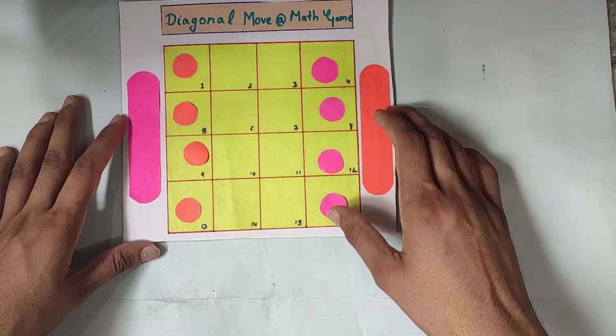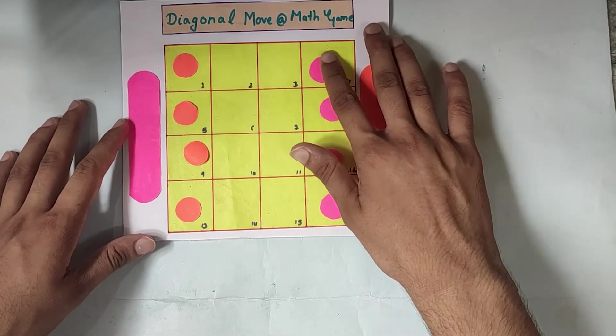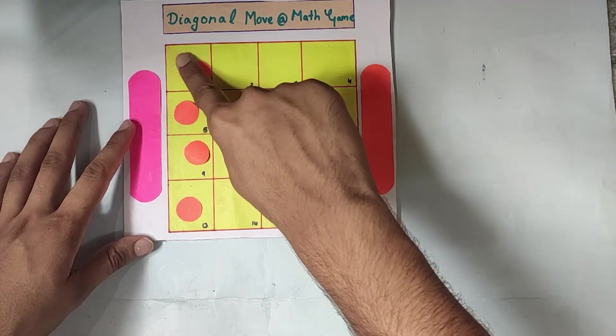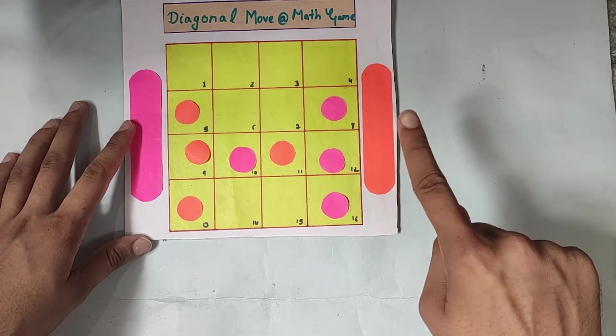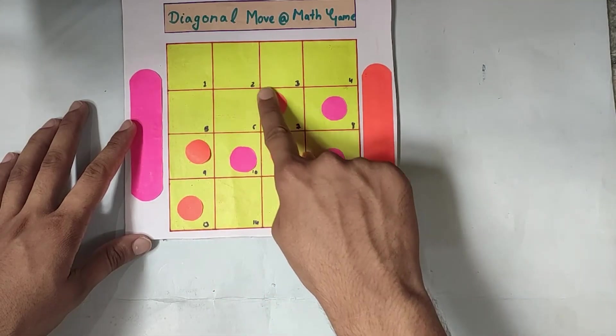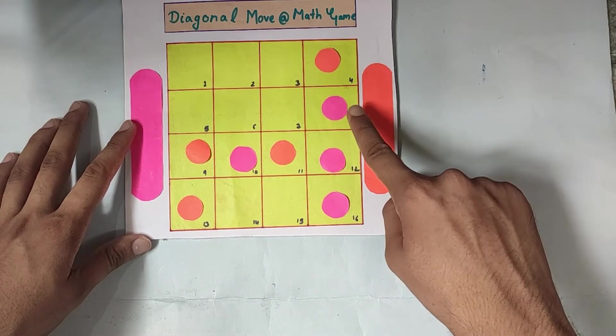Let's quickly take one example on how to play this game. For example, I move this pink circle to here. It's one step. Now, I move this orange circle to here. It's two steps. Now, it's three step, four step and five step.